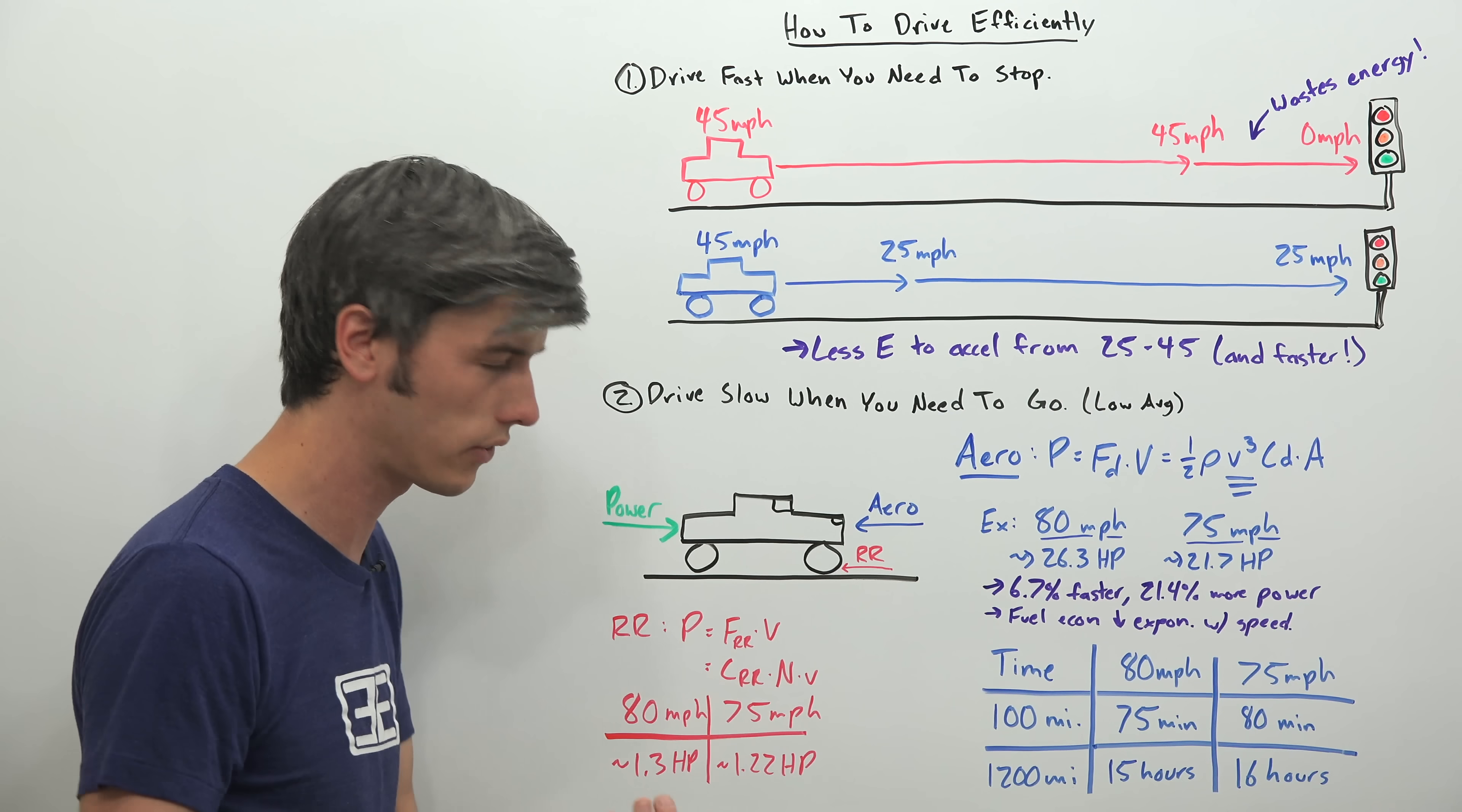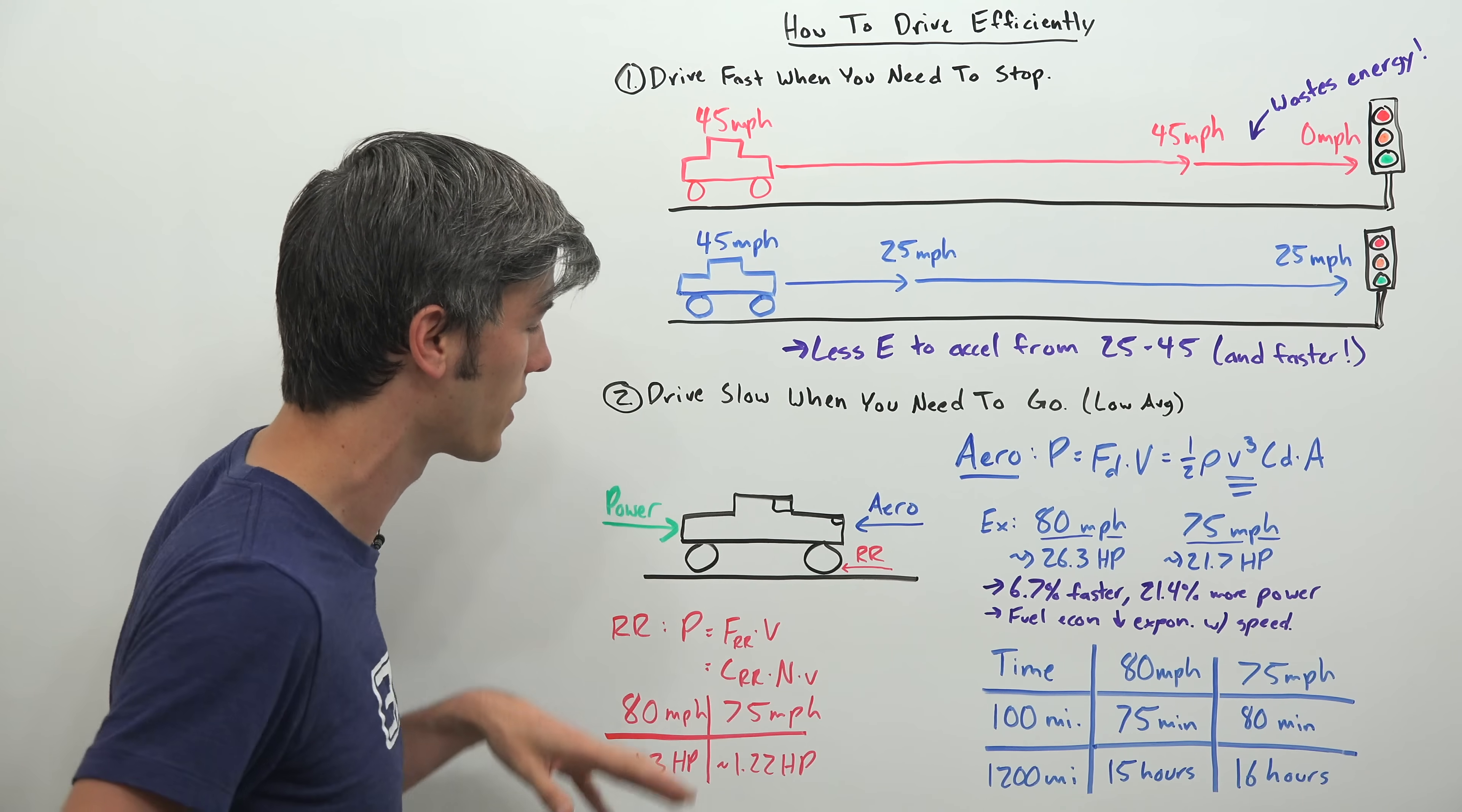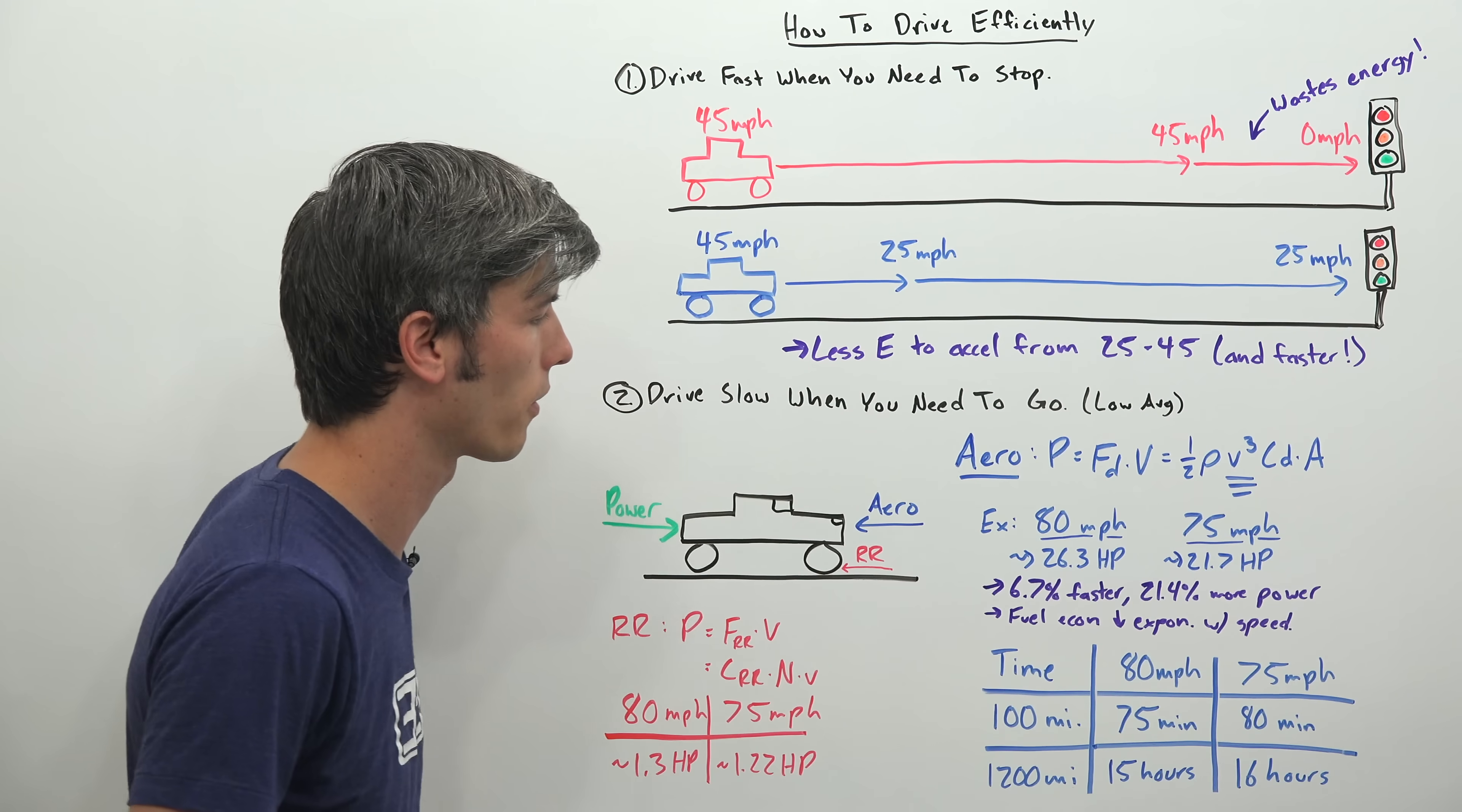Now in the case of rolling resistance, it's actually very minor. 80 miles per hour taking just 1.3 horsepower, 75 miles per hour taking 1.22 horsepower. So not a huge difference in rolling resistance, the amount of power required to overcome it. Really it comes down to aerodynamic drag and having that velocity cubed as part of the function.